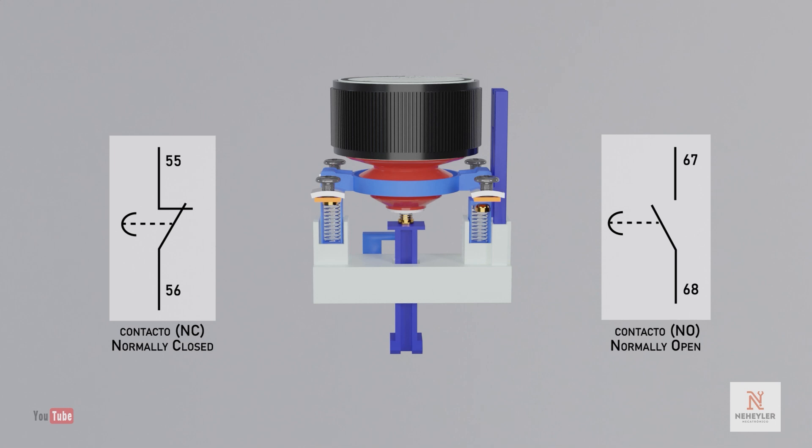When the contactor coil is energized, it then allows the timer latch to be pulled. Therefore, the bellows deforms and travels a certain distance until it activates a small lever, which allows the contacts to change state. That is, contact 55-56 opens and contact 67-68 closes.